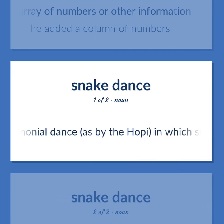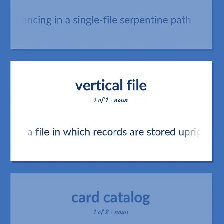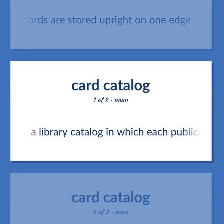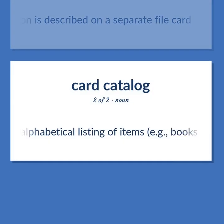A ceremonial dance, as by the Hopi, in which snakes are handled or invoked. A group advancing in a single-file serpentine path. A file in which records are stored upright on one edge. A library catalog in which each publication is described on a separate file card. An alphabetical listing of items, e.g. books in a library, with a separate card for each item. Become our student and get access to effective and free educational materials. Subscribe to our YouTube channel to become a part of our growing YouTube community and to learn English effectively.